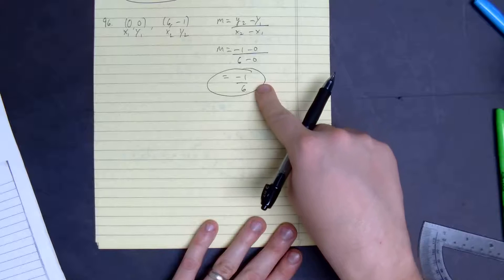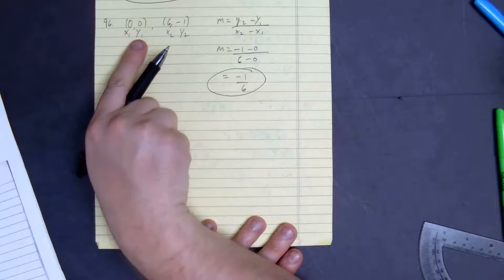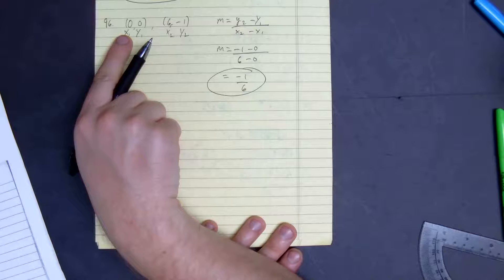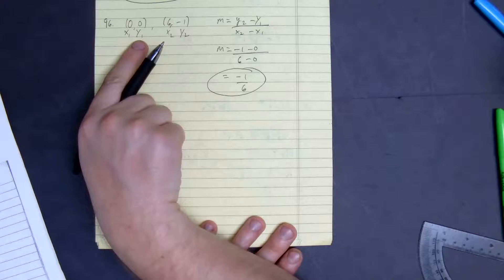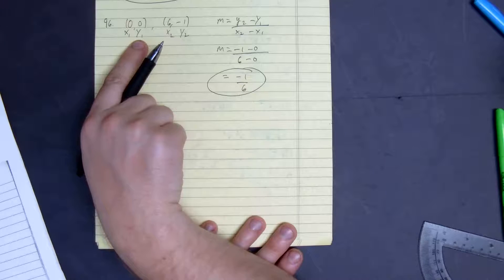So that's our slope. Well, since these are both 0, well more specifically x is 0, our y-intercept is going to be 0. So you don't even need to use point-slope form here if you want to work smarter.